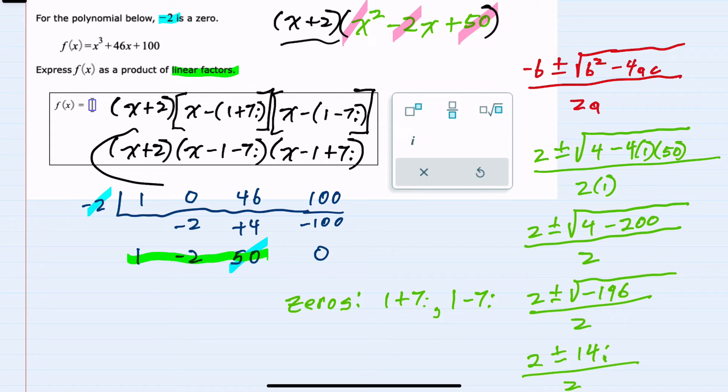This is our function f of x written as linear factors. I just needed to find each one of the zeros, the one given, and the other two that I had to calculate to write it as linear factors.